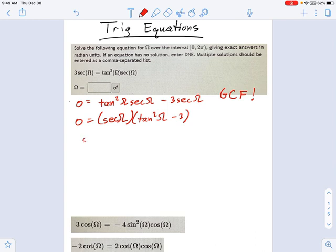So now we solve each of these separately. And we get secant omega equals 0. And we get tangent squared omega equals 3, which leads us to tangent of omega equals plus or minus, don't forget that plus or minus, plus or minus square root of 3.